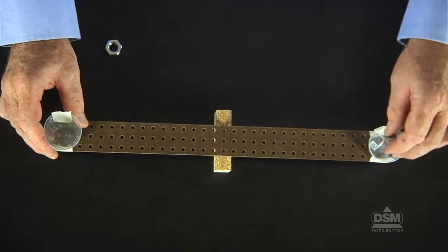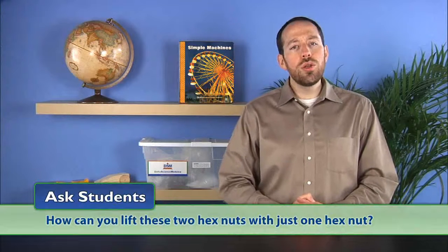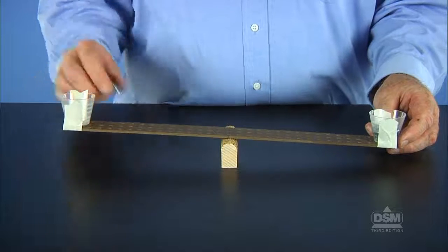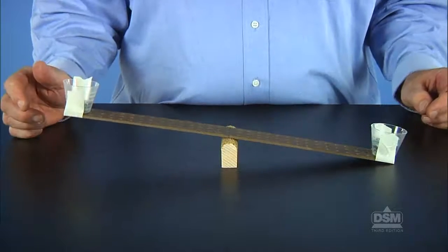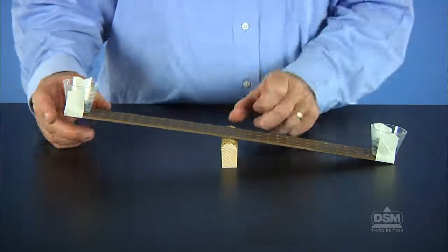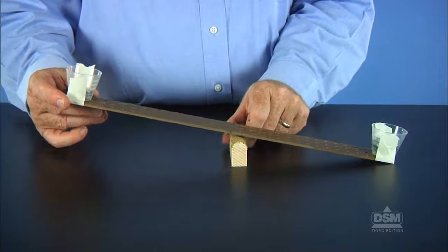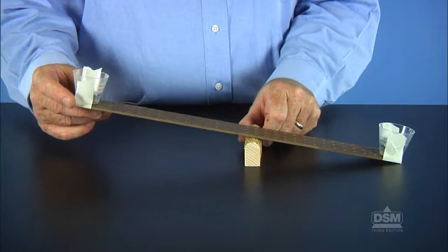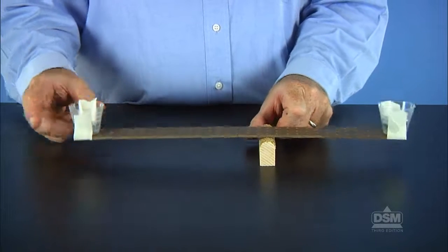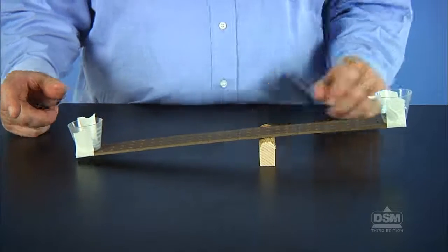Have the students remove the paper clips from the effort cup and add a second hex nut to the load cup. Ask students, how can you lift these two hex nuts with just one hex nut? Guide students to understand that they can lift the two hex nuts by placing the single hex nut in the effort cup and moving the fulcrum toward the two hex nut load cup. Have the students use the effort of one hex nut to lift a two hex nut load and record the position of the fulcrum on their activity sheets.